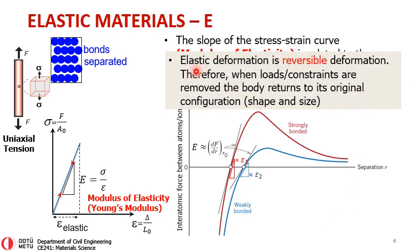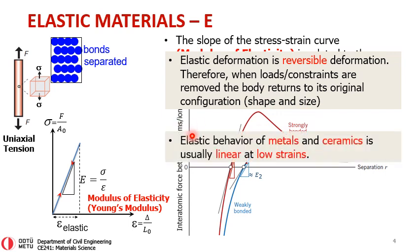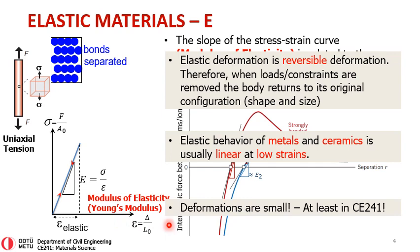Elastic deformation is reversible. Therefore, whenever you remove the loads — or sometimes we call them constraints — whenever those are removed, the body returns to its original configuration: it regains its shape and size. Elastic behavior of metals and ceramics is usually linear at low strain. In this class, the small deformations assumption is valid most of the time, so keep this in mind.